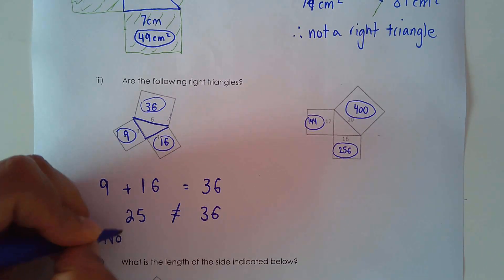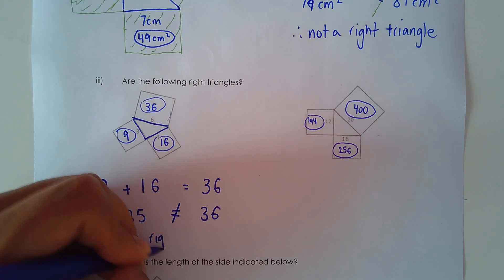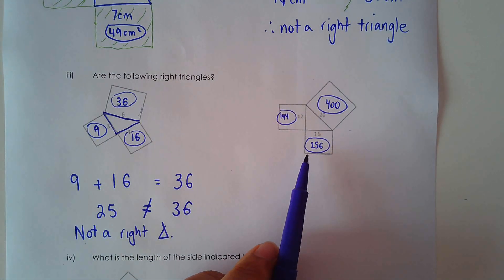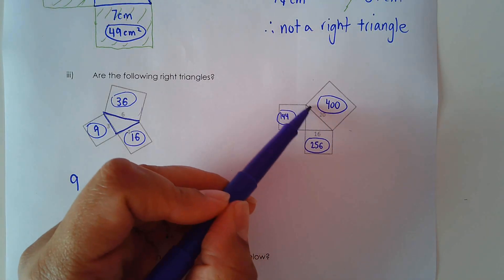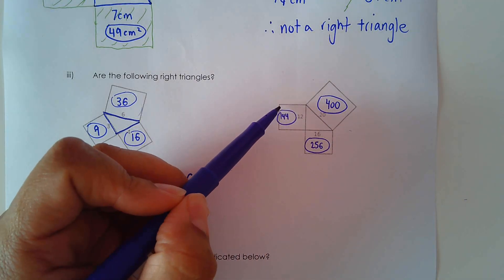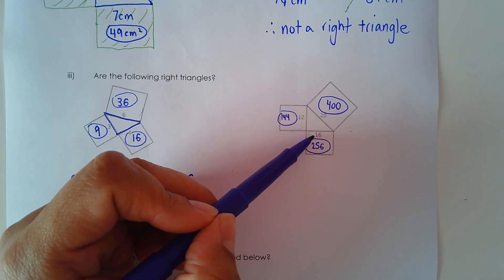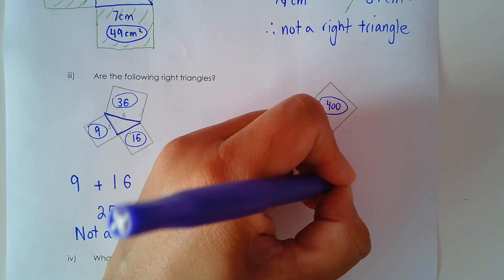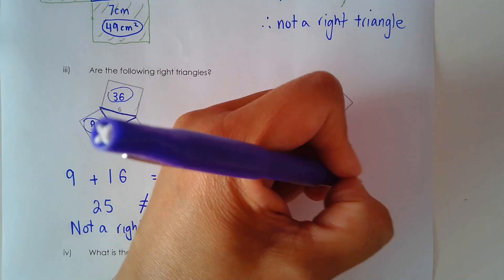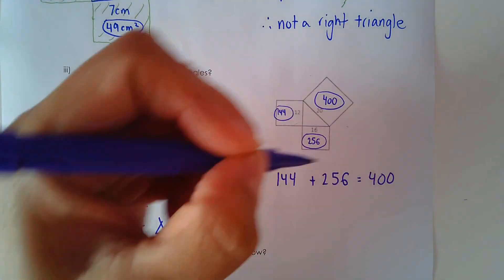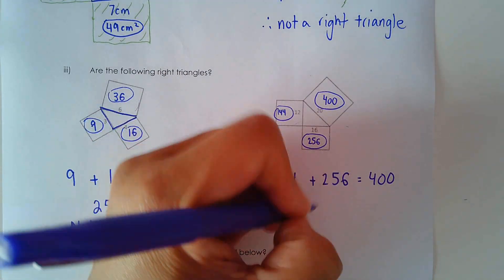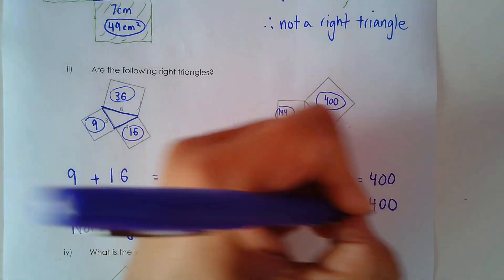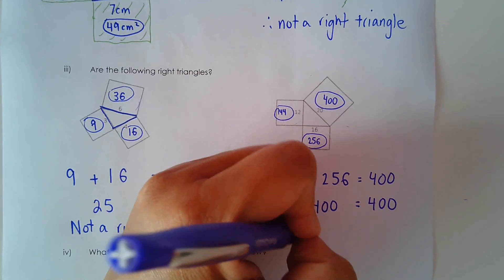In the second example, this is the hypotenuse because it's the largest number. Do the areas of the legs add up to 400? Is 144 plus 256 equivalent to 400? If we add those up, we get 400. So yes, it's a right triangle. That's the key topic you'll be exploring in section 1.2.